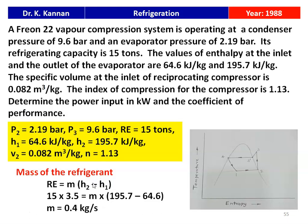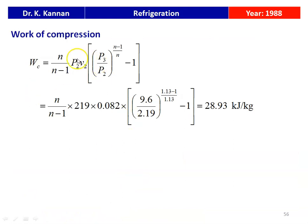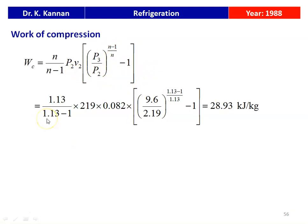The mass flow rate of the refrigerant is calculated from the given refrigeration effect. Refrigeration effect equals mass into enthalpy change across the evaporator. So, 15 tons, where 1 ton equals 3.5 kJ/s, gives 15 × 3.5 = M × (195.7 − 64.6). Solving, the mass flow rate M = 0.4 kg/s. The work of compression: Wc = (N/(N−1)) × P2V2 × [(P3/P2)^((N−1)/N) − 1]. Substituting: Wc = (1.13/0.13) × 2.19 × 0.082 × [(9.6/2.19)^(0.13/1.13) − 1] = 28.93 kJ/kg.